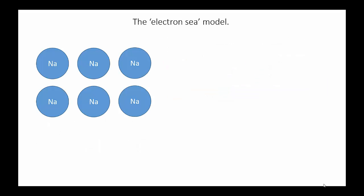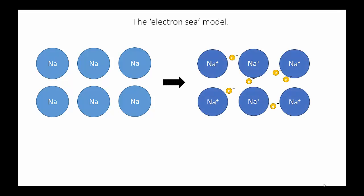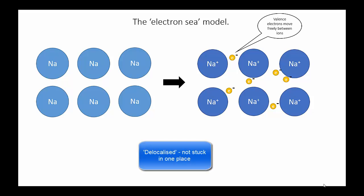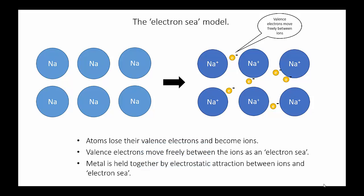When metal atoms are close to one another, they no longer behave like neutral atoms. Instead, the valence electrons can leave their parent atom and move around, forming a sea of delocalized electrons between the atoms. Because each atom has lost valence electrons, it's now a positive ion.